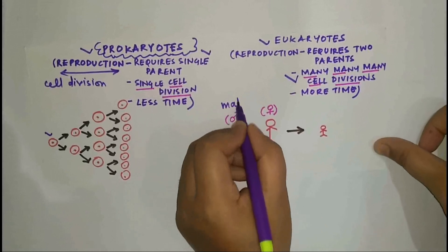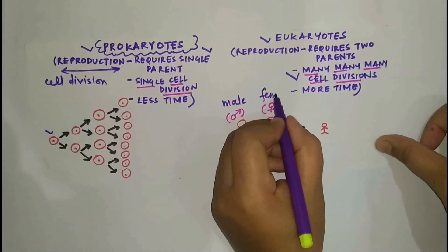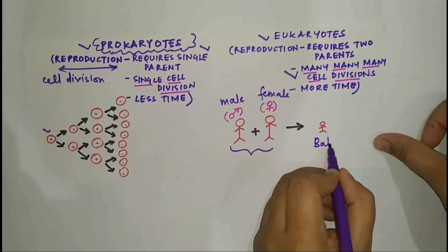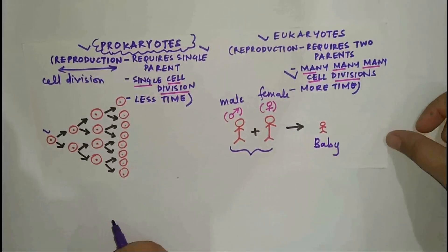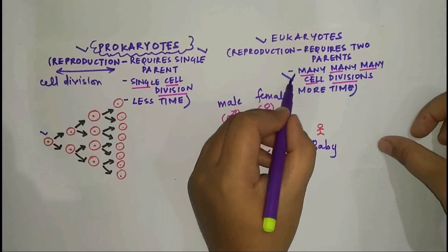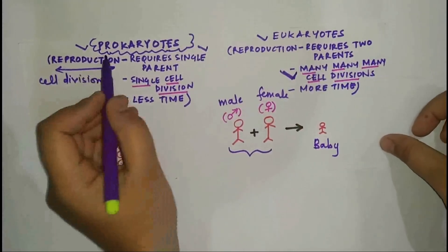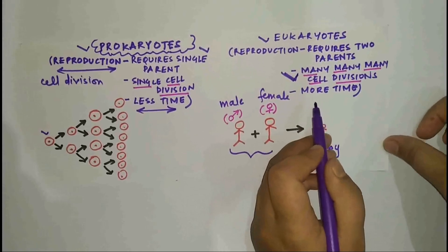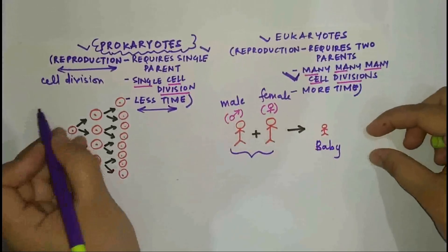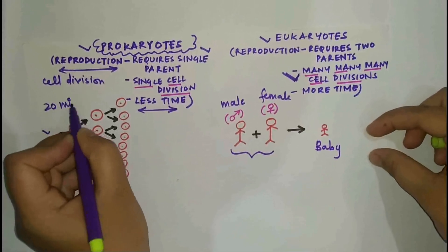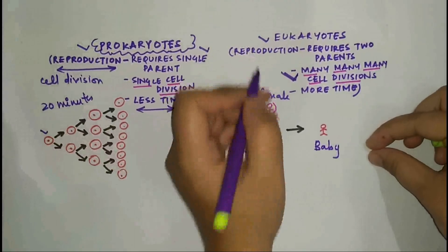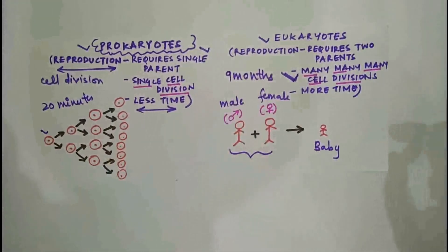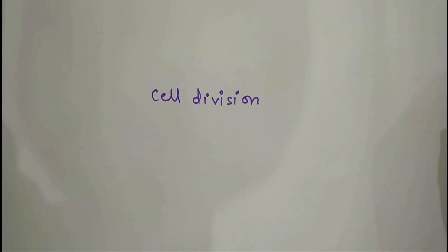As you see in the diagram, there is a male parent cell and a female parent cell. With the combination of the germ cells, they give rise to a baby — for example, in human beings. In human beings, reproduction requires many, many cell divisions. While prokaryotes like E. coli take only 20 minutes to form a daughter cell, in human beings it requires nine months to form that small baby.